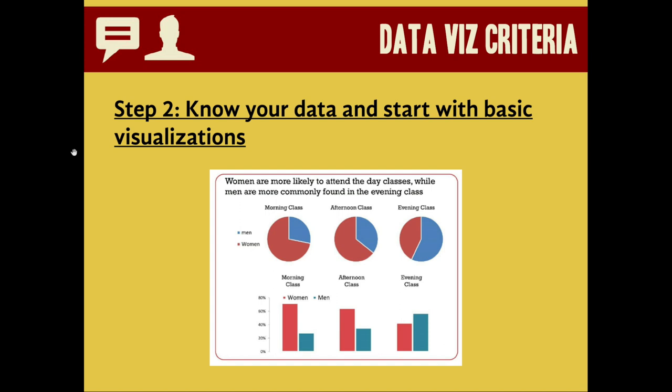Well, pie charts are good at showing off proportions. And so they're more appropriate for this particular visualization to demonstrate the relative scale. We see in morning classes, women make up almost 75%, and it's a lot easier to visualize in the pie chart than in the bar graph.